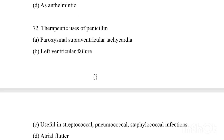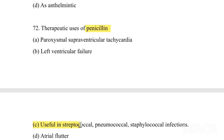Therapeutic use of Penicillin: Option A: Paroxysmal supraventricular tachycardia. Option B: Left ventricular failure. Option C: Useful in streptococcal, meningococcal, staphylococcal infections. Option D: Atrial flutter. Answer is Option C — Penicillin is useful in streptococcal, meningococcal, and staphylococcal infections.